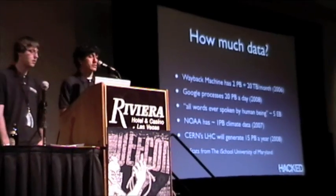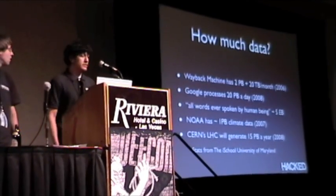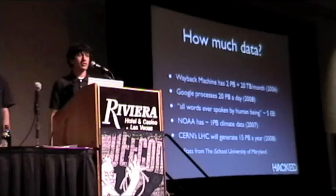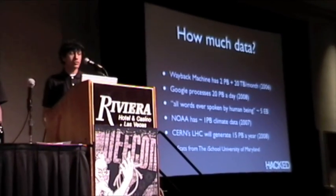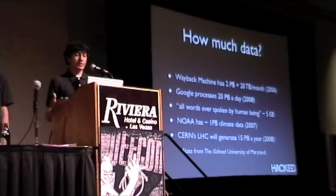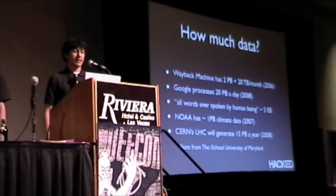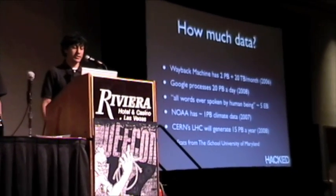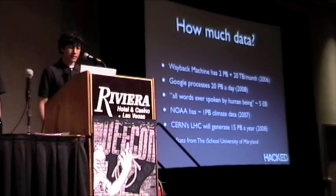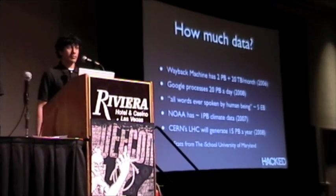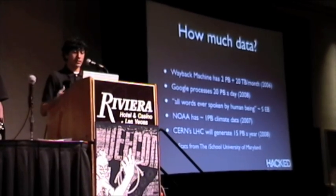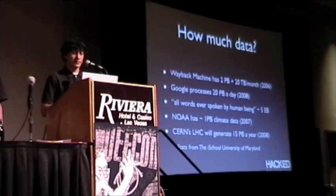So how much data are we talking about? The Wayback Machine has about 2 petabytes of data total and they're adding about 20 petabytes a month. Google processes 20 petabytes a day. What would you do if someone came to you with 20 petabytes and asked you to get information out of it? CERN's Large Hadron Collider will generate 15 petabytes a year when it's fully up and running — large amounts of data that you need to be able to sift through and analyze.